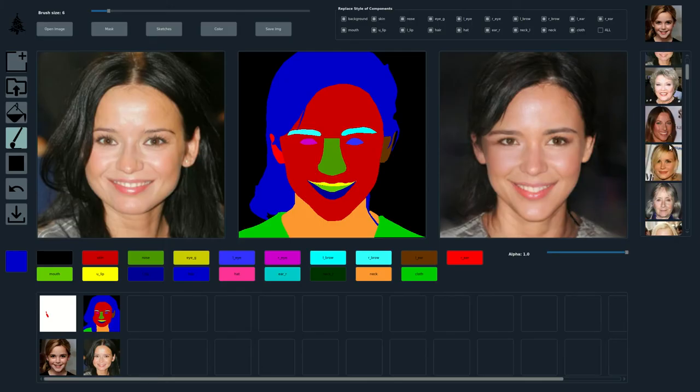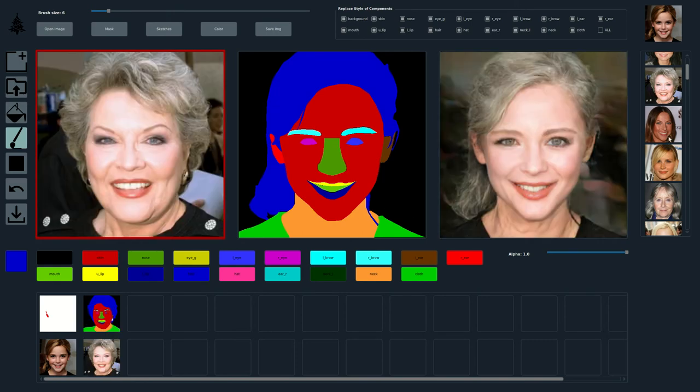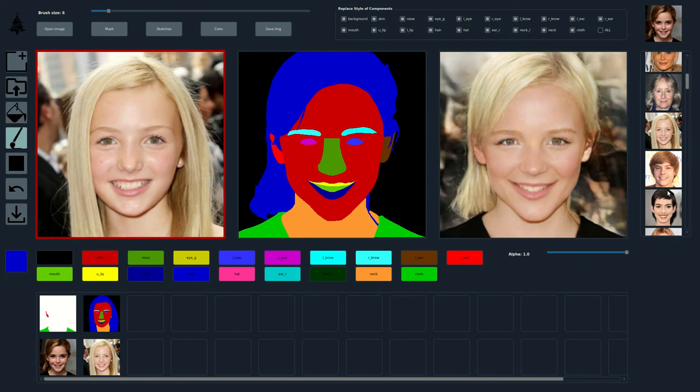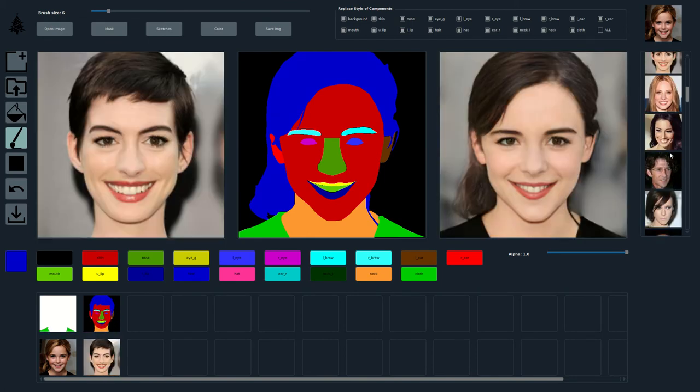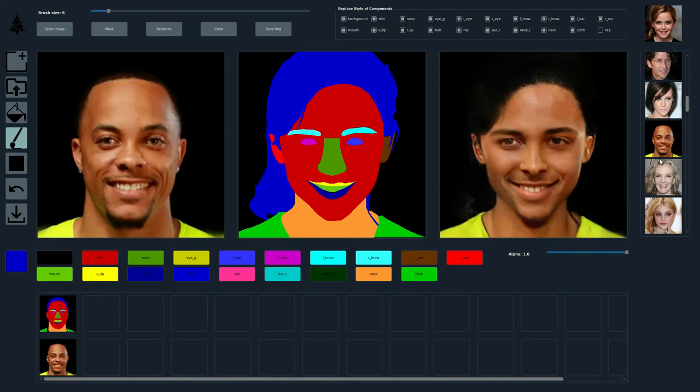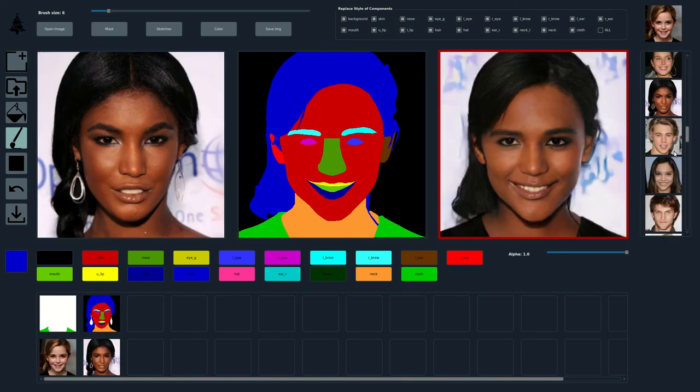Finally, we will introduce our user interface for face editing. To the left, we show the current style image from which we extract per-region style codes. In the middle, we show the current segmentation mask. To the right, we show the current result.